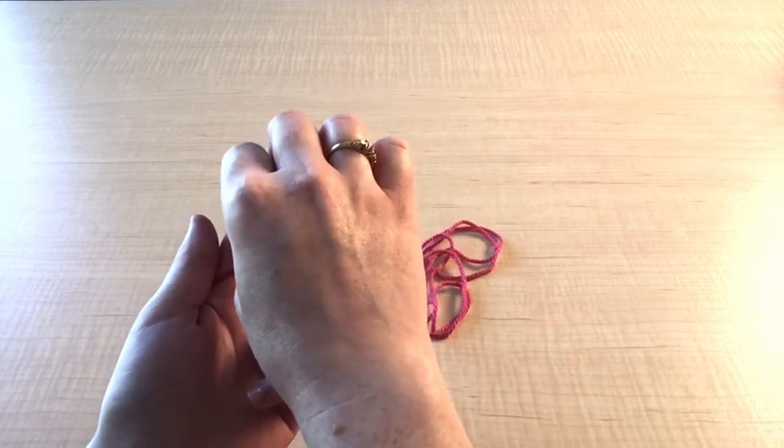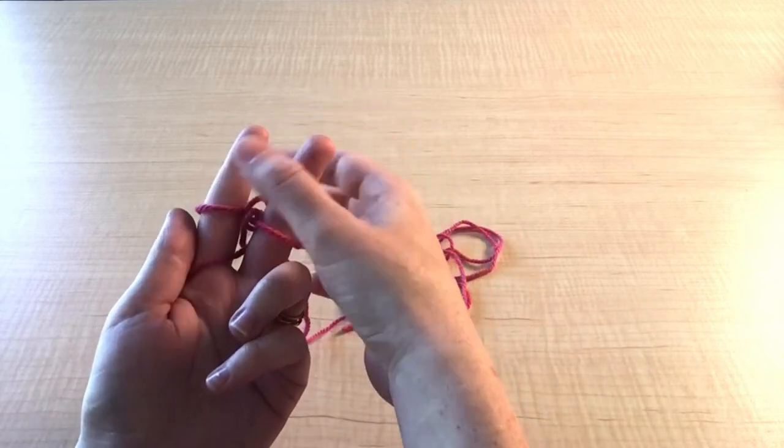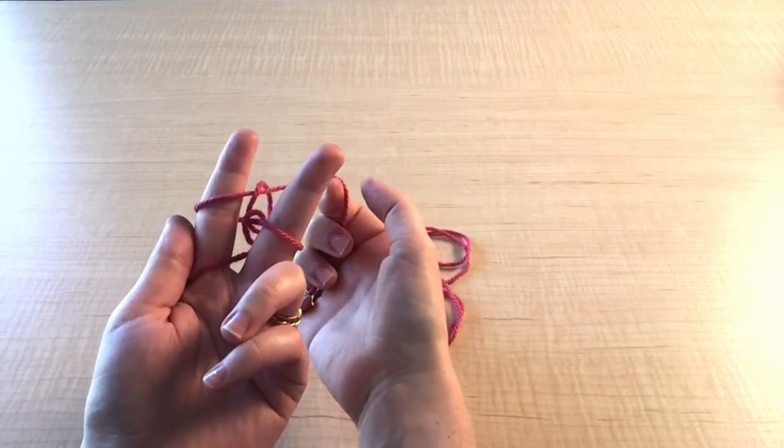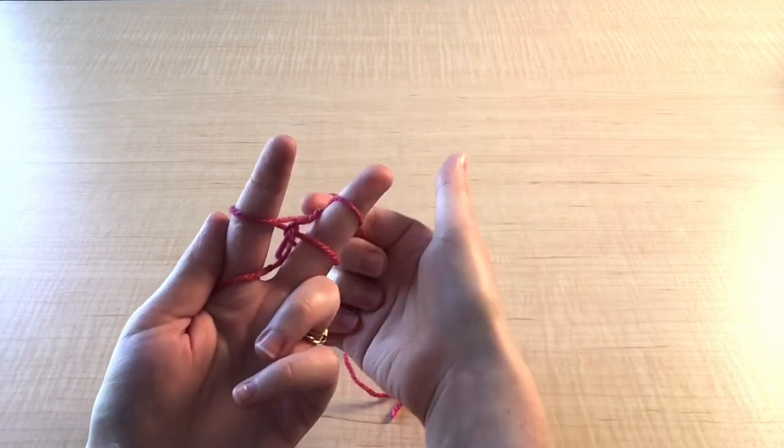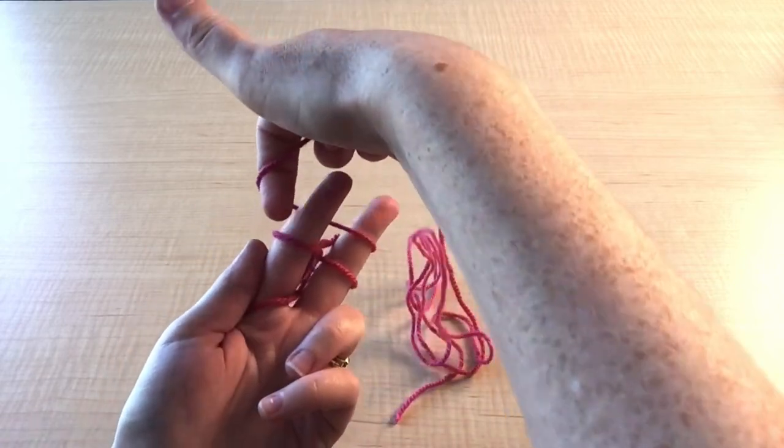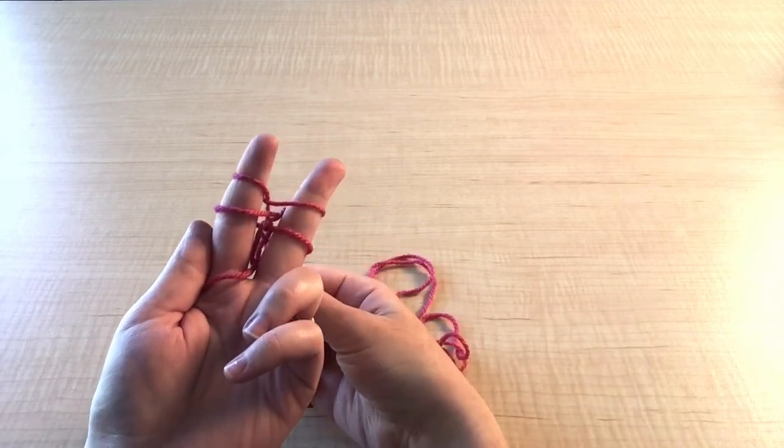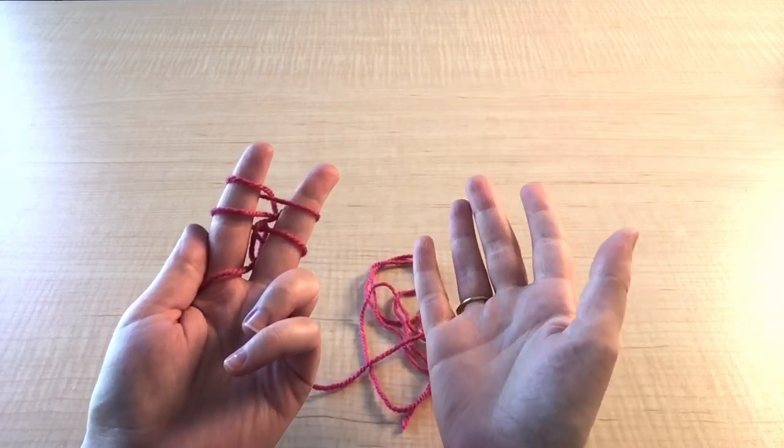With one loop now on each finger, we'll pull it down a little bit and we need another set of loops. Wind the yarn under and over your middle finger and then under and over your pointer finger, and pull the end of the yarn through the middle of your fingers and let it rest behind your hand.